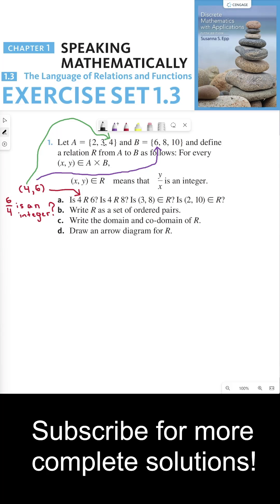This says let A be the set containing the three elements 2, 3, and 4. And B is the set containing 6, 8, and 10.